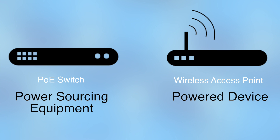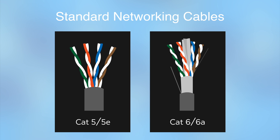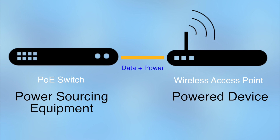Power over Ethernet, also known as PoE, is a feature that allows standard networking cables such as Cat5e and Cat6 to simultaneously transmit data and DC power using a single cable.